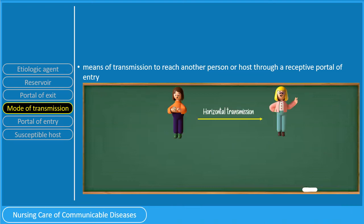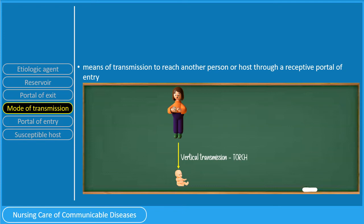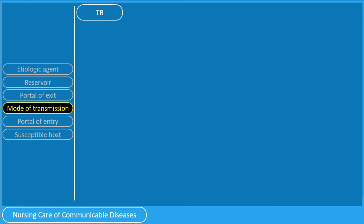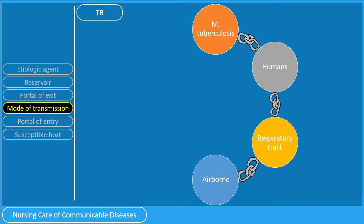The modes of transmission discussed are referred to as horizontal transmission. There is also vertical transmission, wherein the mother transfers the infectious agent to the baby. A classic example of diseases transmitted vertically are the TORCH infections: T for toxoplasmosis, O for others, R for rubella, C for cytomegalovirus, and H for herpes simplex virus. Going back to TB, the mode of transmission is airborne transmission.